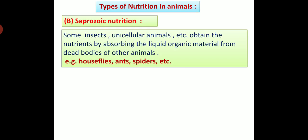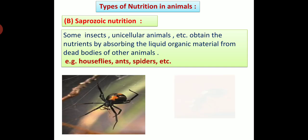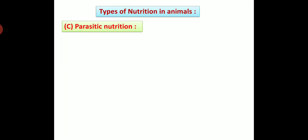Second type: Saprozoic Nutrition. Some insects, unicellular animals, etc. obtain their nutrients by absorbing liquid organic material from dead bodies of other animals. For example, house flies, ants, spiders, etc.